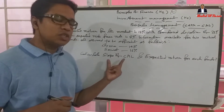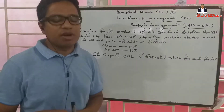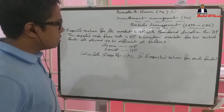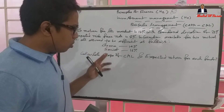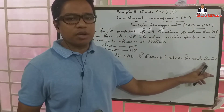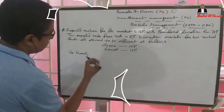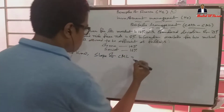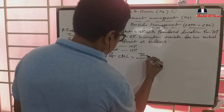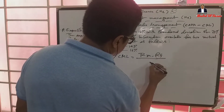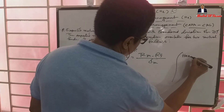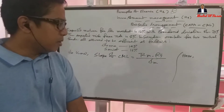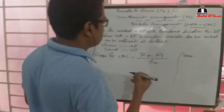The slope of CML — Capital Market Line — is defined as the expected return for each fund. Let's calculate the slope of CML.